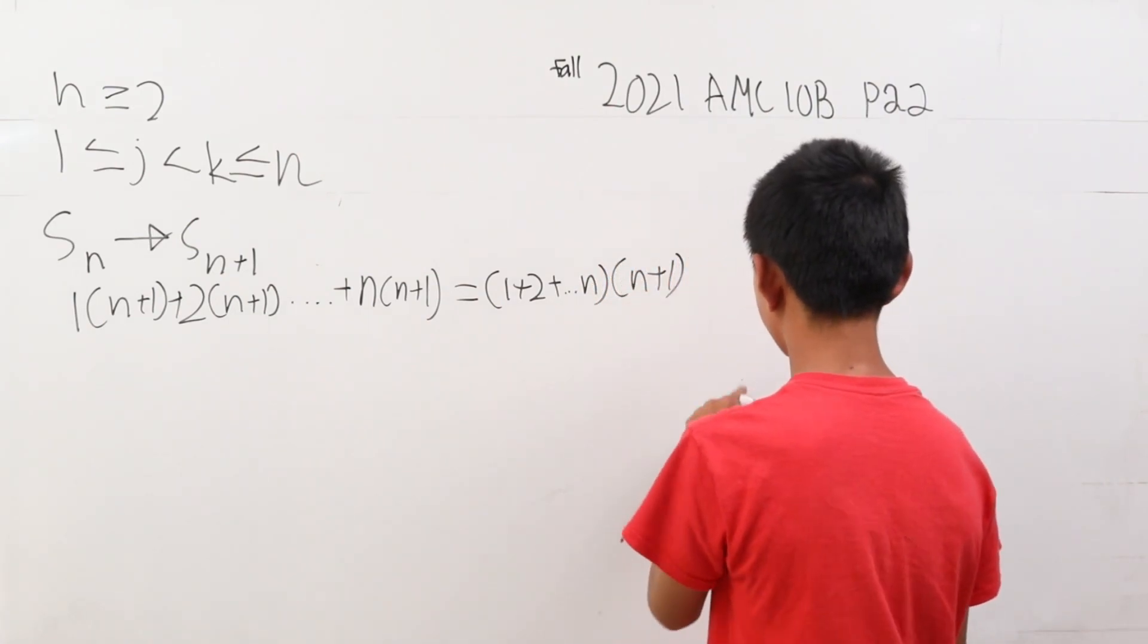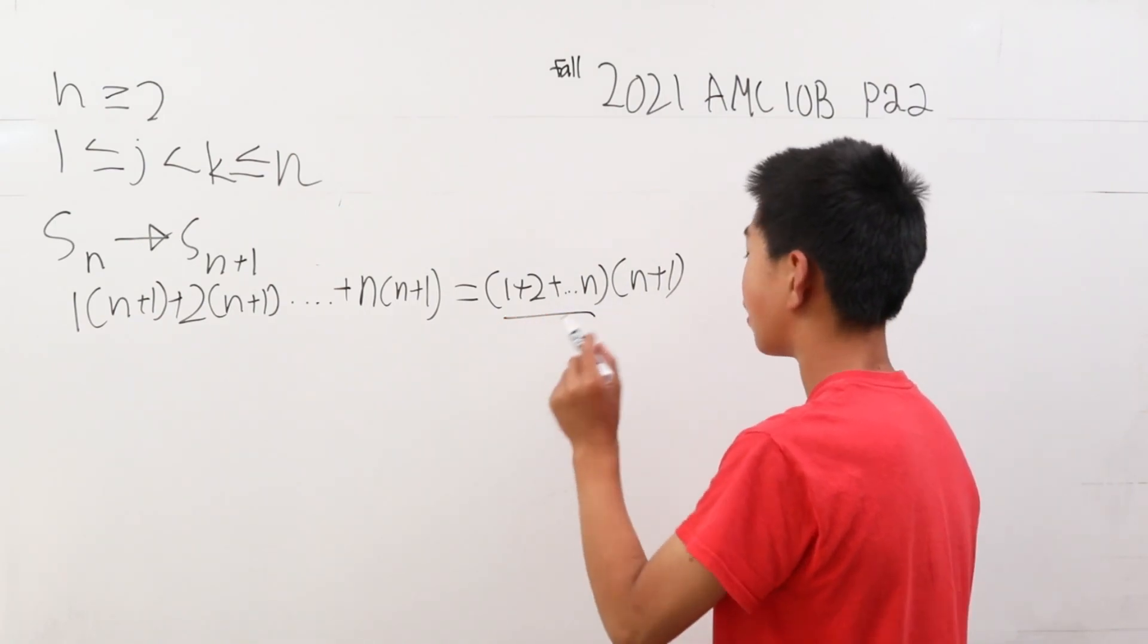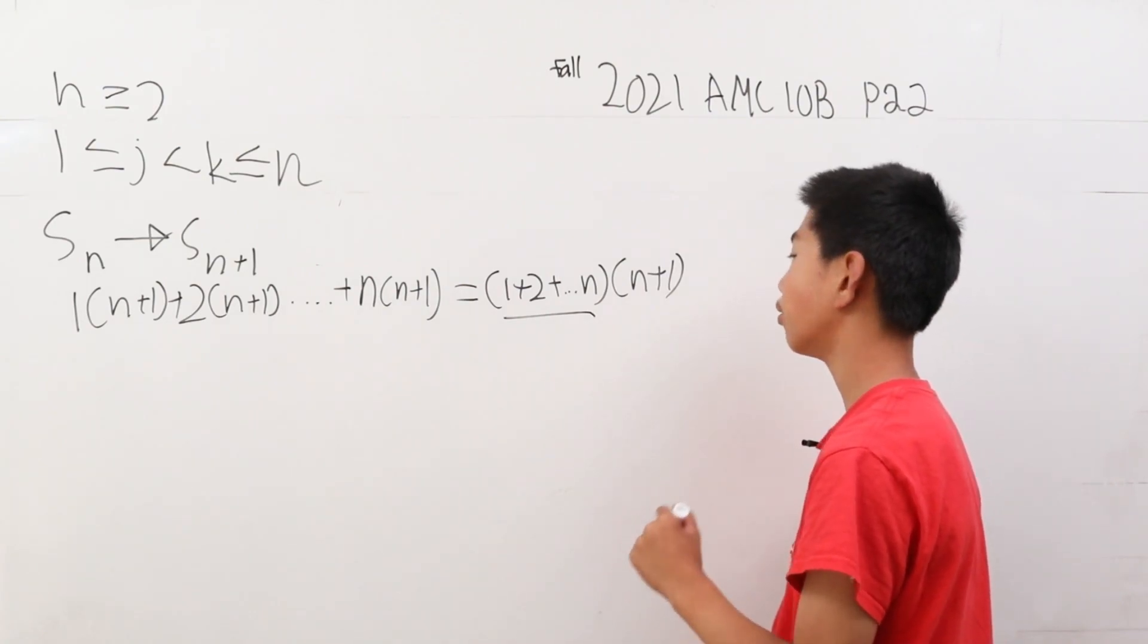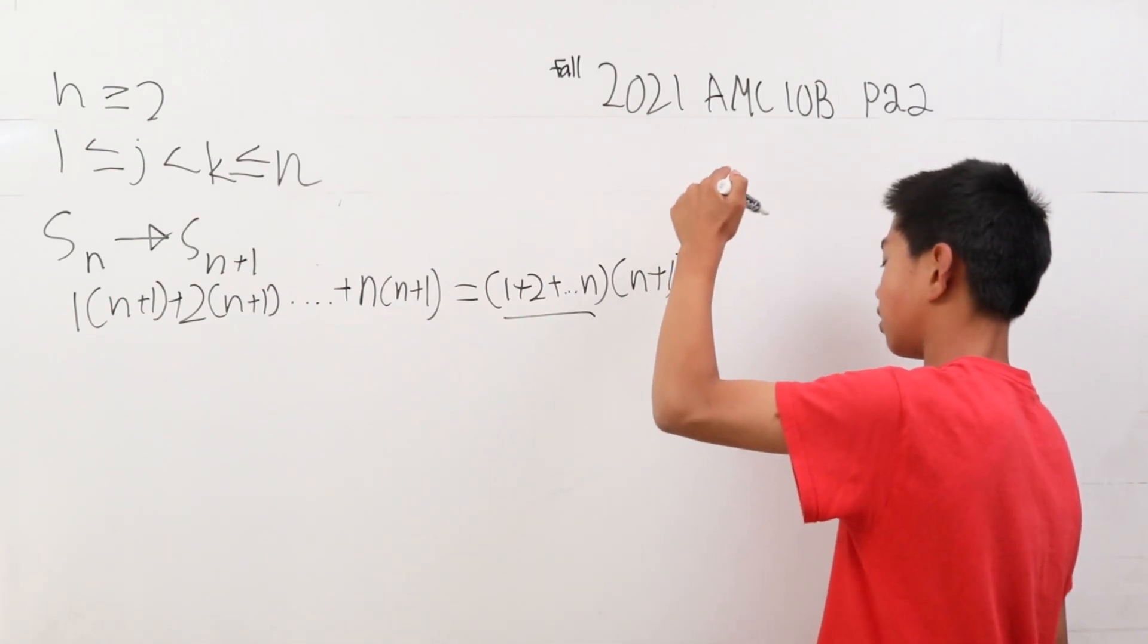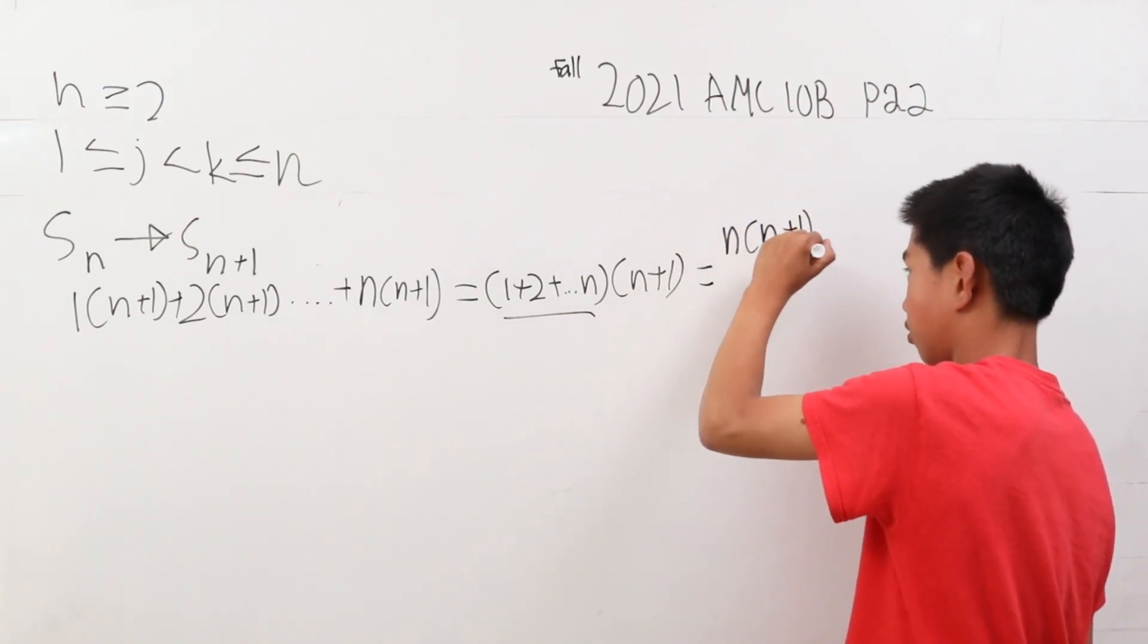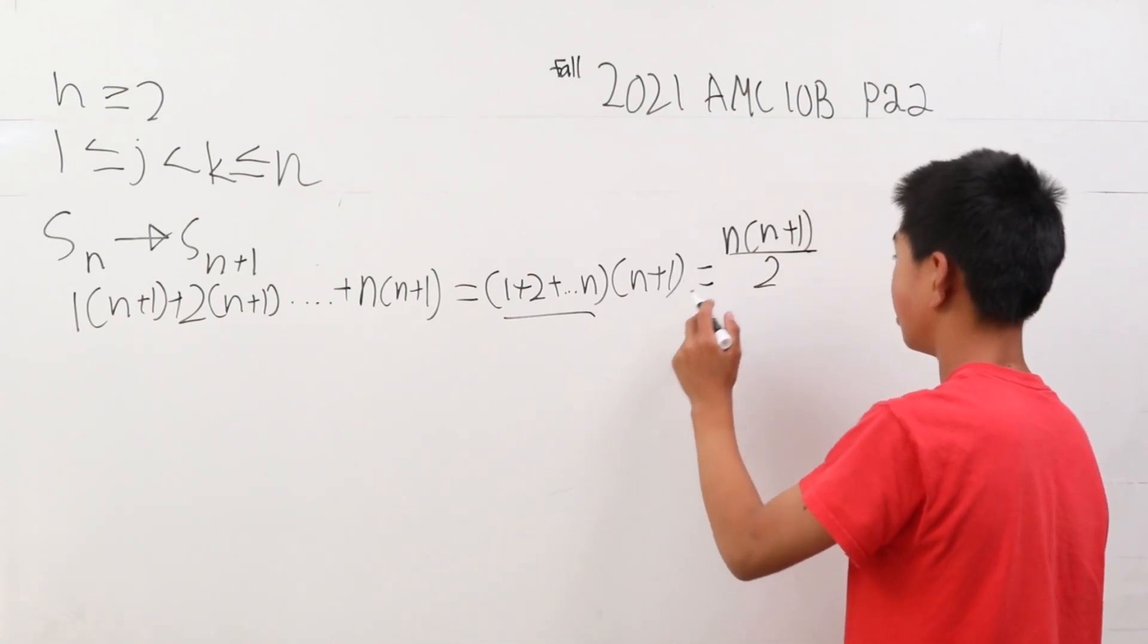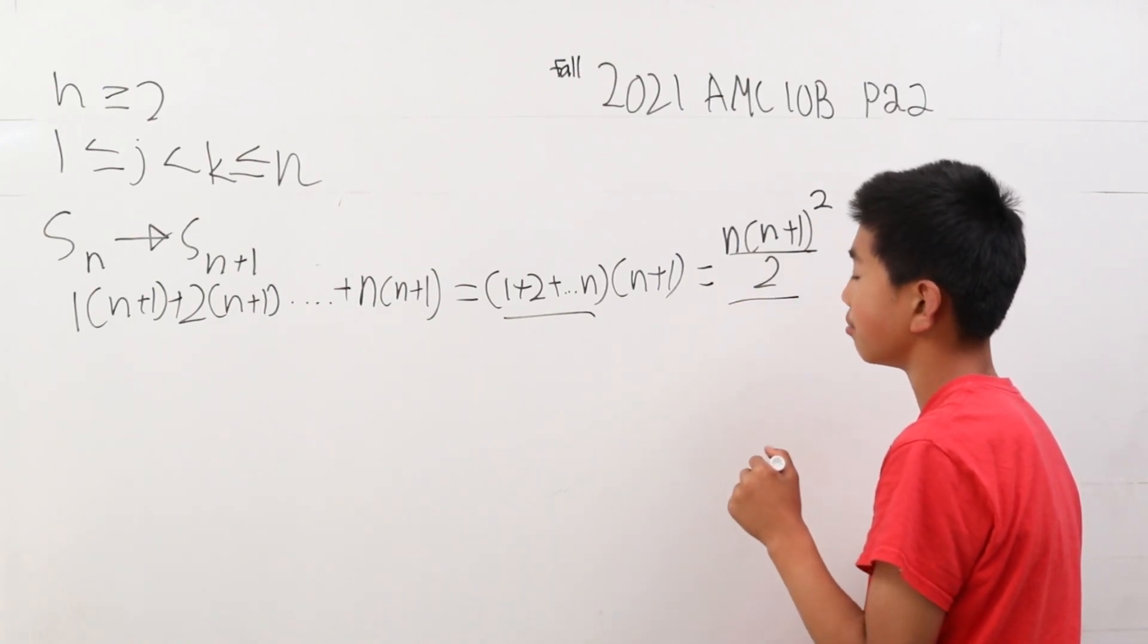Now, there's a formula for this, a sigma formula. When you're adding values from 1 all the way to a certain variable or term, this would be n times n plus 1 over 2, but there's still that n plus 1 term here, so you square it. This is the equation we're going to use.